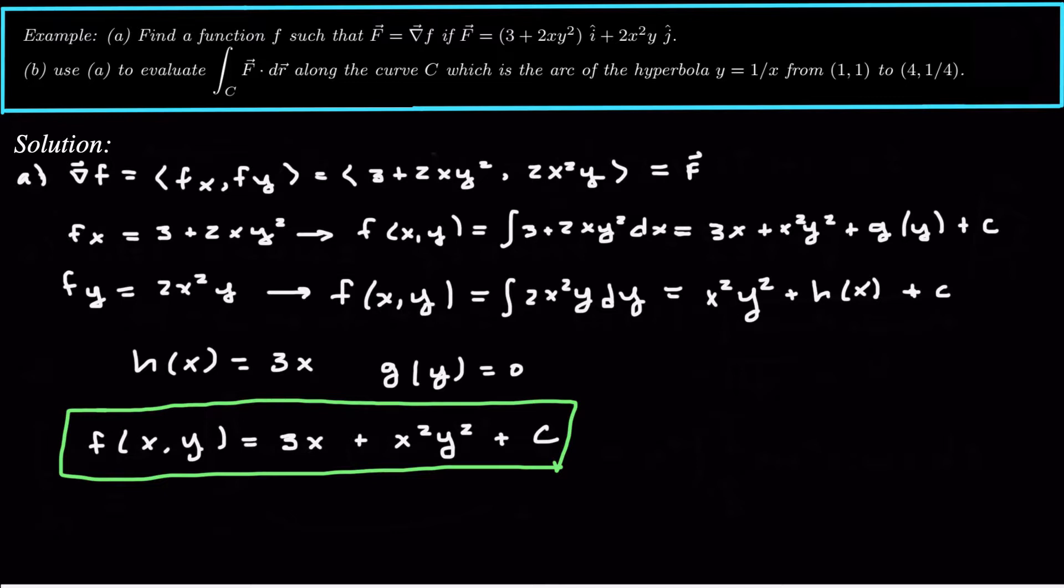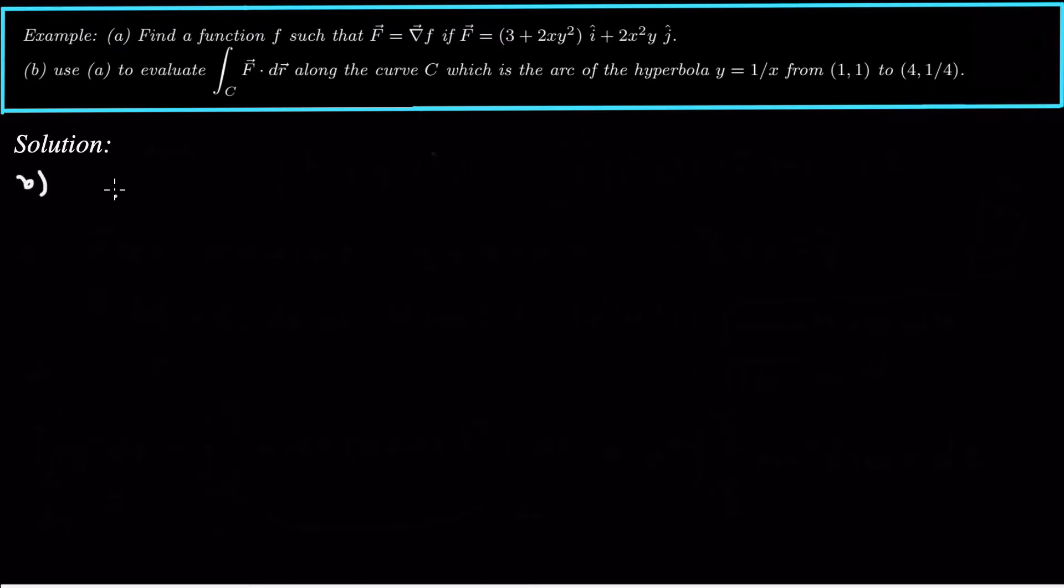And then we want to use that in part b to evaluate the line integral. So let's look at part b. So for part b, the main thing to remember is that the integral over the curve c of a gradient, so a conservative vector field, is just the vector field, the potential function evaluated at the second point, minus the potential function evaluated at the first point. So this is what we call path independence. It doesn't matter what path you take to get between these two points.